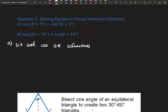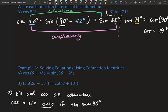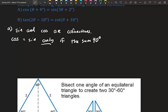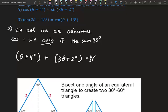Sine and cosine are co-functions, and co-functions are equal only when the sum of their angles is 90°. So we set (θ + 4°) + (3θ + 2°) = 90°. That gives us 4θ + 6° = 90°. Solving for θ: subtract 6, divide by 4 — we get θ = 21°.